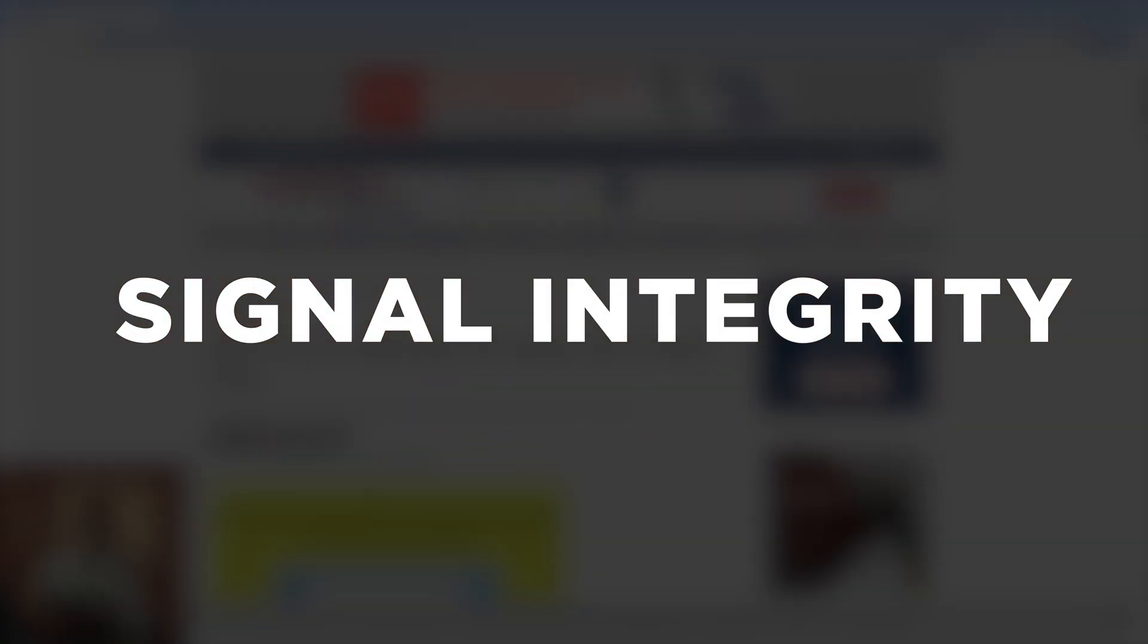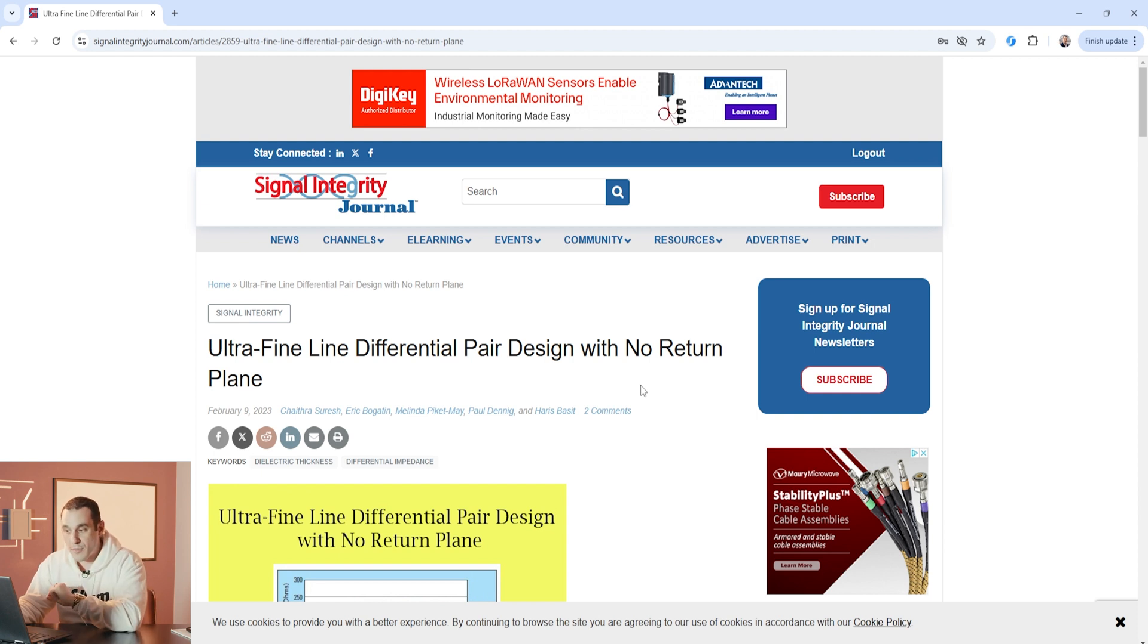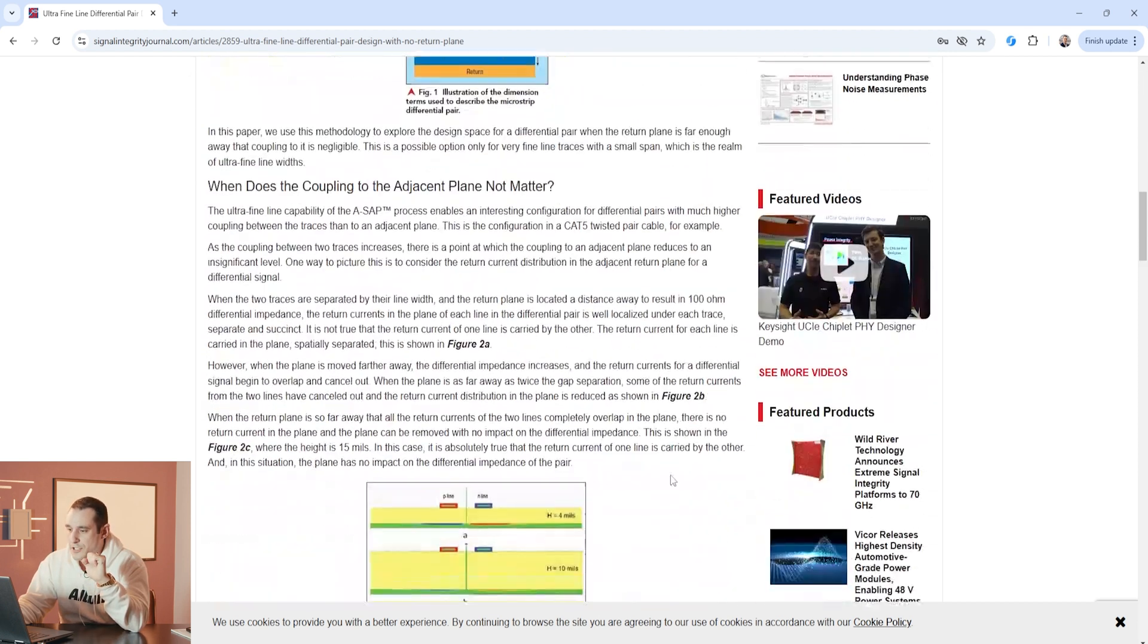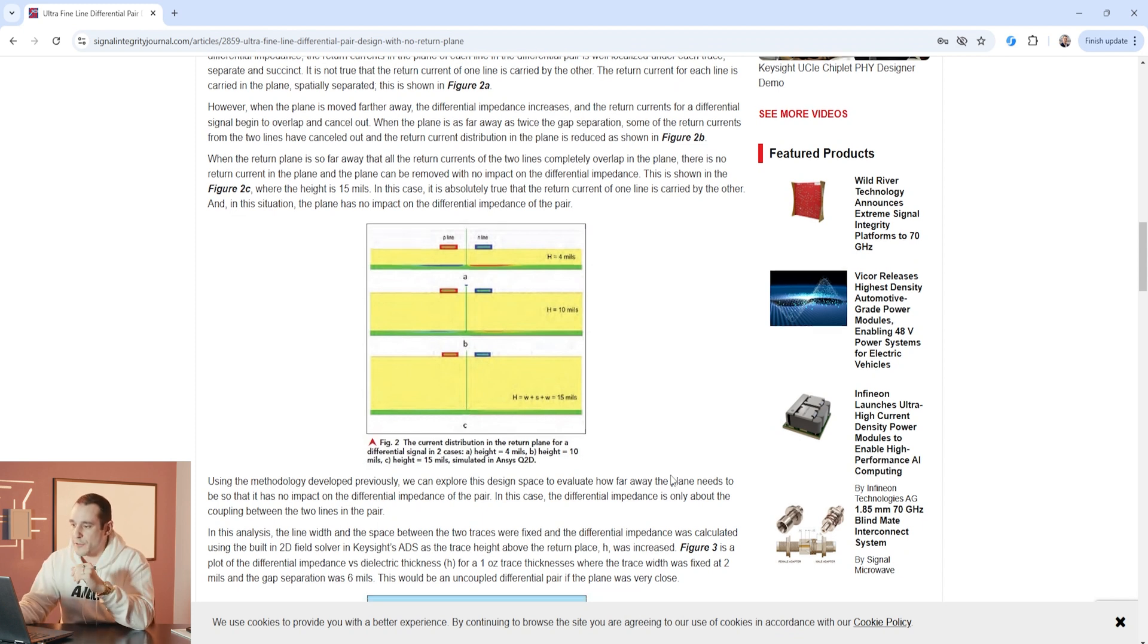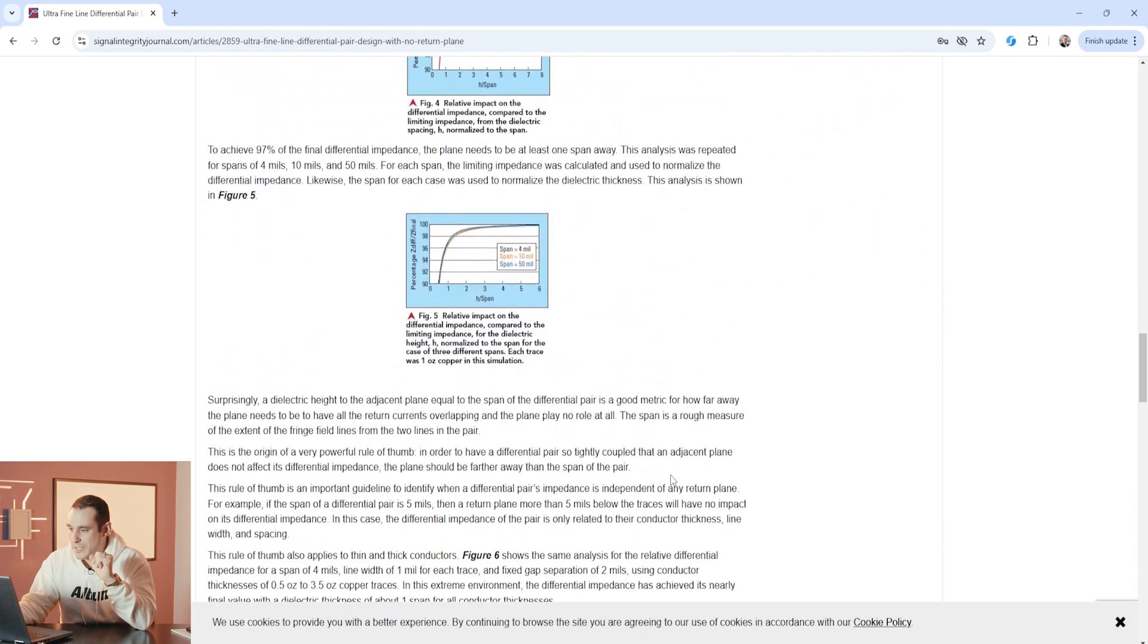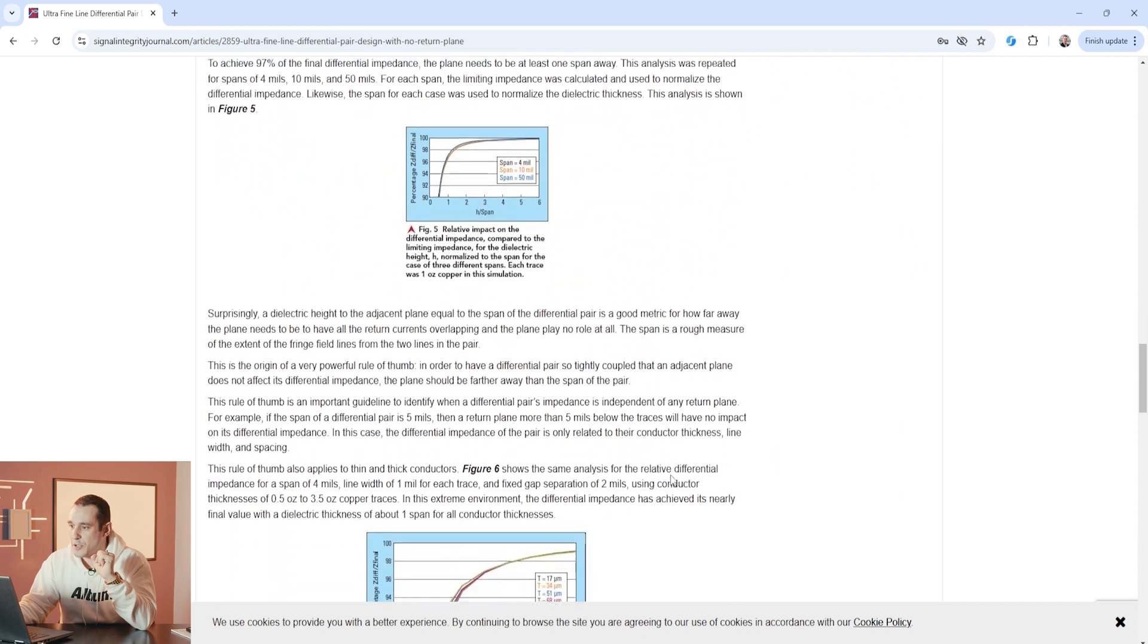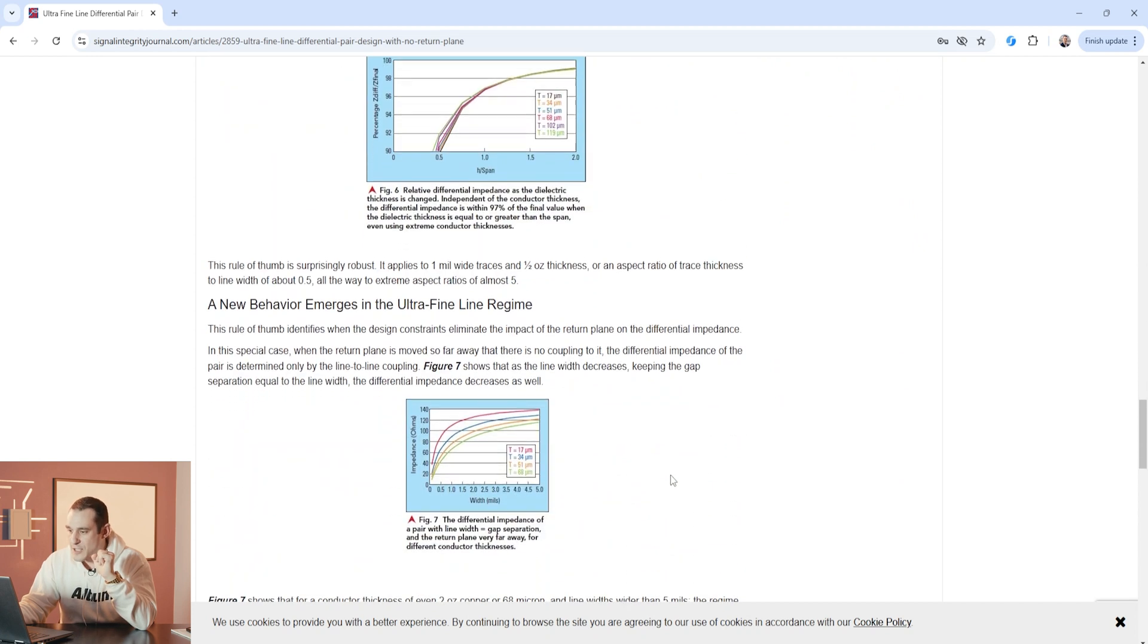Now here we are in signal integrity journal, this is an article that is co-authored by Eric Bogatin, there are some other great authors on this article and this article is titled ultra fine line differential pair design with no return plane. Now this is ultimately targeting design in the UHDI regime but it really nicely explains what happens when differential pairs get very close together and when the influence of ground stops mattering.